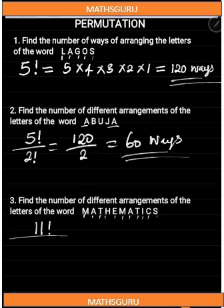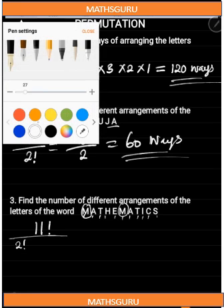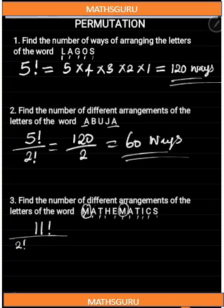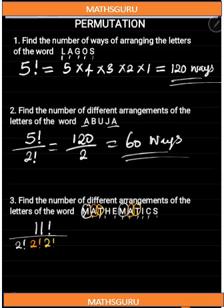For M, we have one and two — so we have two indistinguishable M's. Then for A, we have one A here and another A here — so we have two indistinguishable A's. Then for T, we have one T here and another T here — so we have two indistinguishable T's. Then H appears only once, E appears only once, and the remaining letters appear just once each.